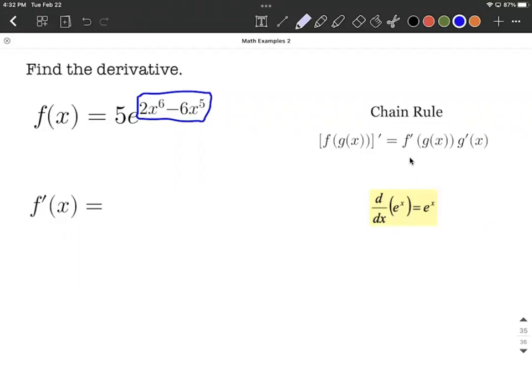We'll utilize the chain rule on this. First, we're going to focus on the outer function, the 5e to a power. Normally with 5e^x, the derivative would be 5e^x. But in our case, what we'll do is take the derivative by saying it's going to be e raised to that same power.